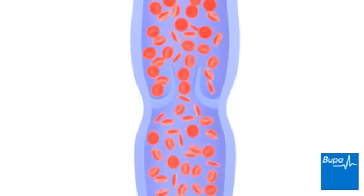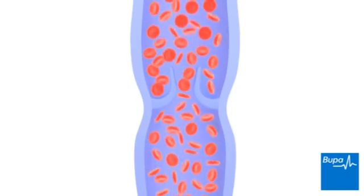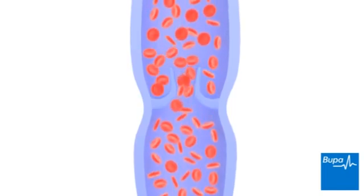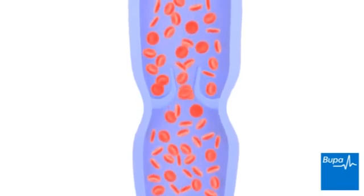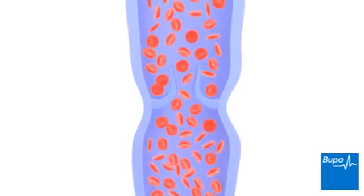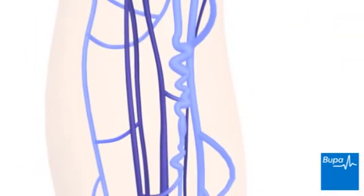Here we show a vein that has become varicose. Here we show a varicose vein in the lower leg. Varicose veins may cause symptoms such as aching, itchiness or swelling of the ankles.